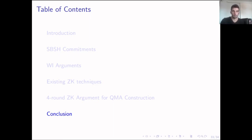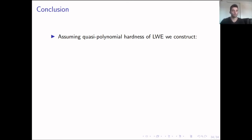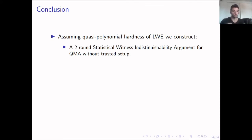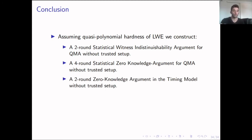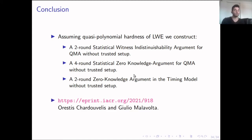To conclude, our results are: assuming quasi-polynomial hardness of LWE and using SBSH commitments, we construct a two-round statistical witness indistinguishability argument for QMA, a four-round statistical zero-knowledge argument for QMA, and two-round zero-knowledge arguments in the timing model, both computational and statistical depending on the assumptions, all without any trusted setup. The full version of the paper is available for anyone interested in more construction details. Thank you very much for your attention.